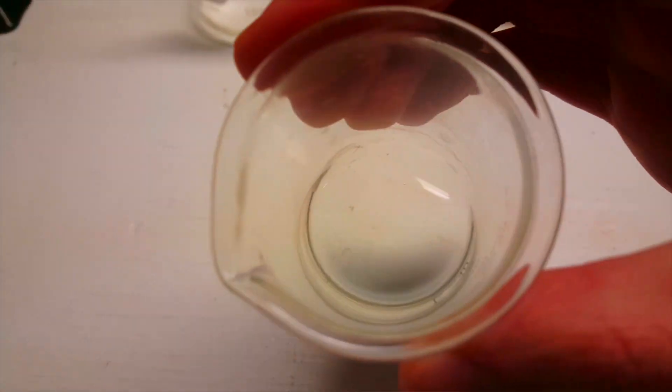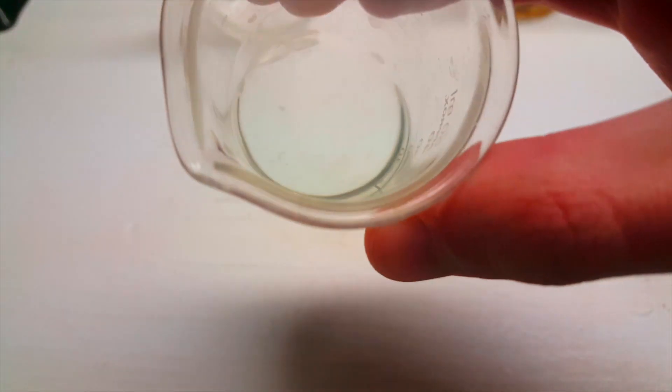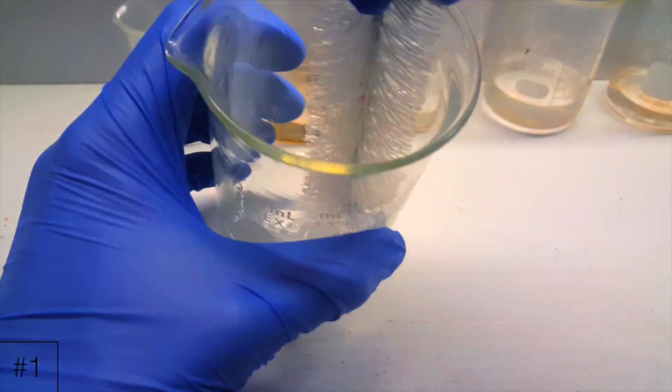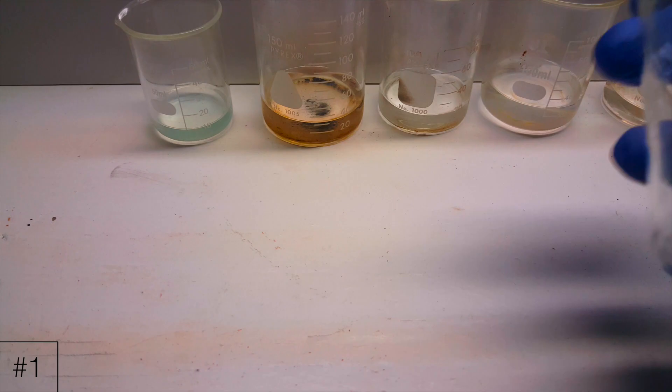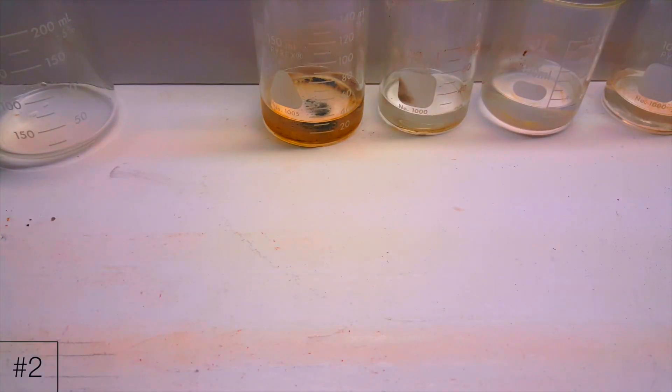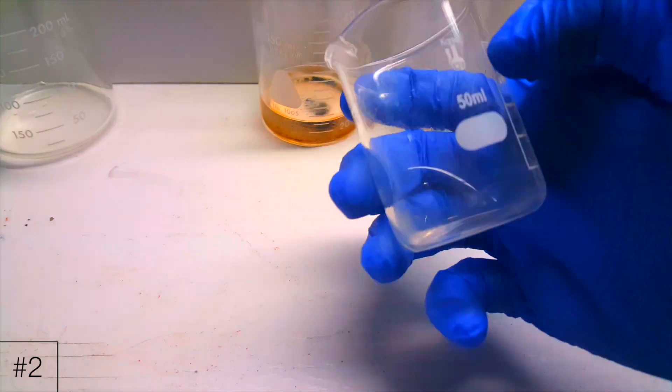However, the copper salts in number 2 were completely removed with the hydrochloric acid. To take care of beaker number 1, I used my brush on the residues, and they came off pretty easily. Beaker number 2 was just washed with a little bit of water.